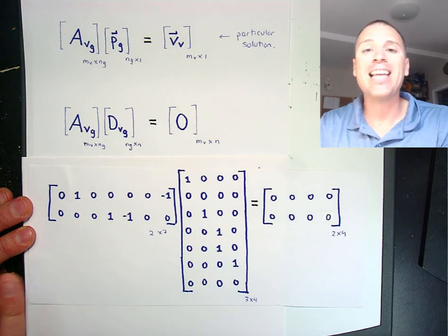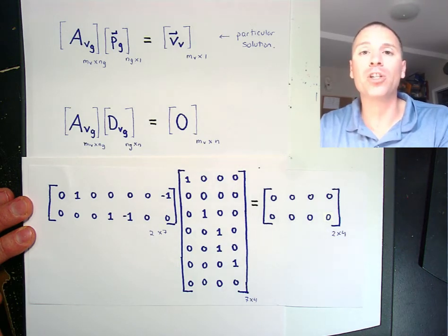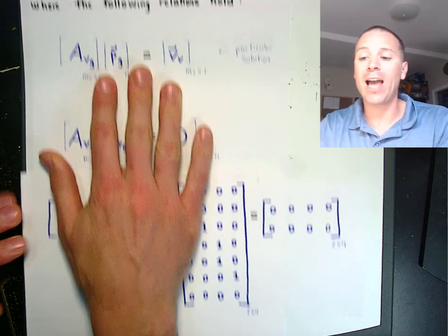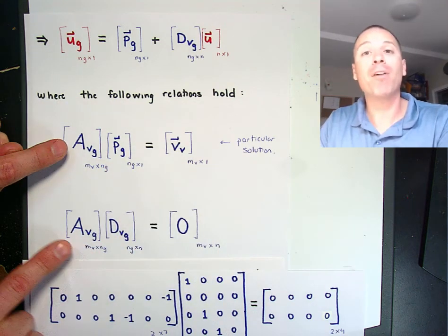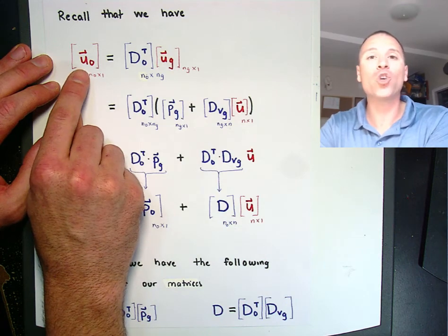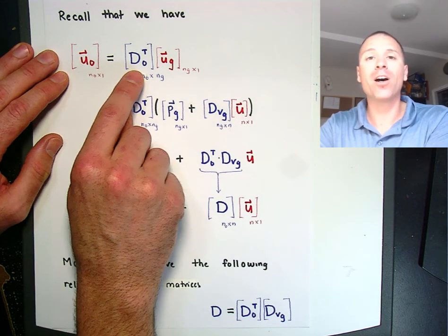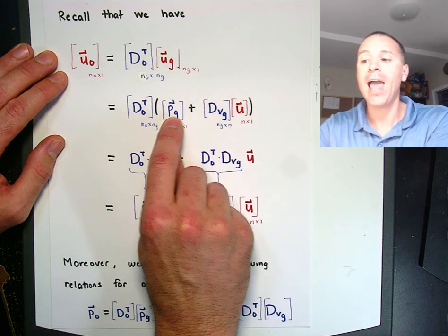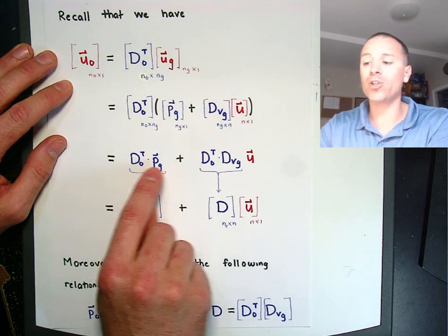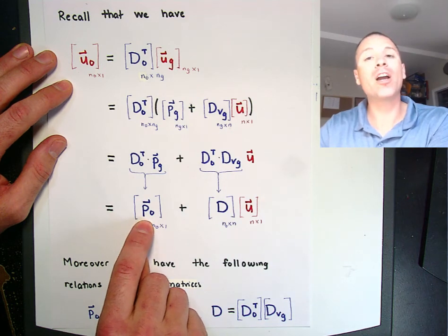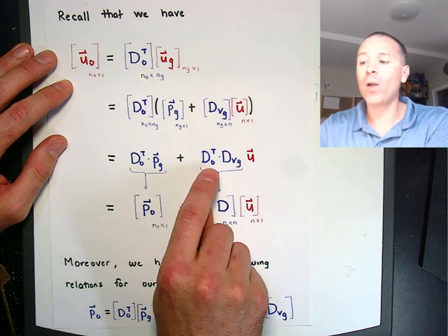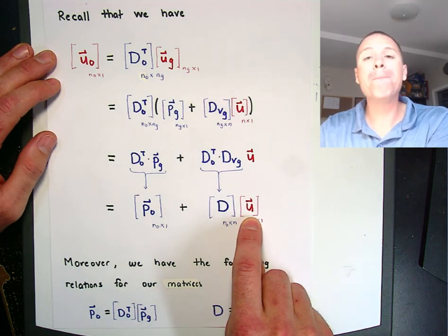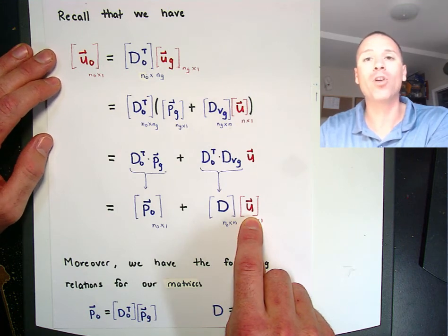I'll talk more about that transformation in the extension video to step 11 — it is deep and has ramifications for a proof of non-singularity at the end of our process. For now, just recognize these two vectors we've created as a way to write the u sub g vector with those special properties. We can now rewrite the grounded node potential vector as the grounding matrix transpose times u sub g. We just have an equivalent method of writing u sub g in terms of a particular solution and something that gets sent to zero.